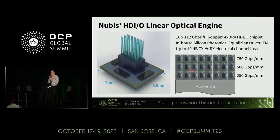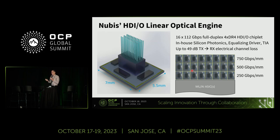Final question on the commercial side: ML/AI clusters absolutely need this density and this is the only way to achieve it — feedback we get from many AI companies. Density is king, even more than power. Latency is also very important, which this solution addresses because there is no retimer inside. The session closes with thanks to the presenter for the overview.